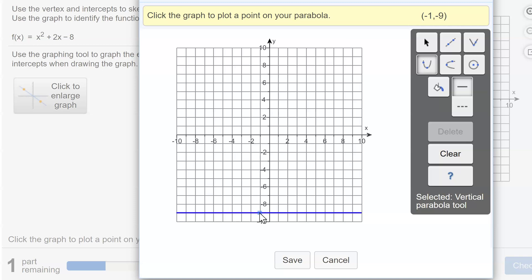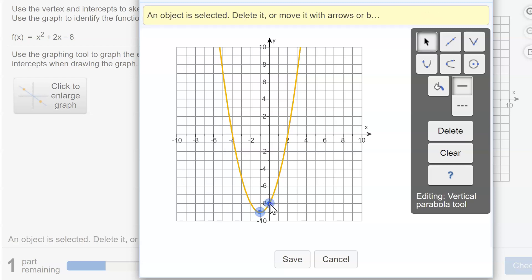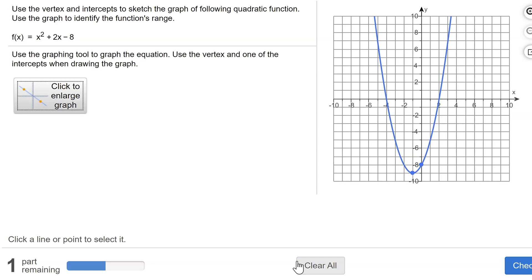Now I have to graph a second point. The instructions for this problem said to graph an intercept, and I found the y-intercept to be (0, -8). Click that point. And now you have your parabola. So if you're happy with it, you save it and then check the answer.